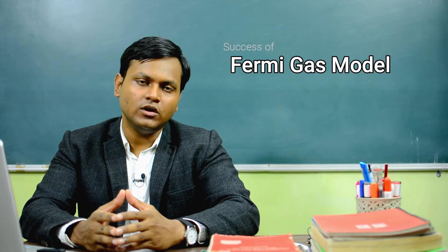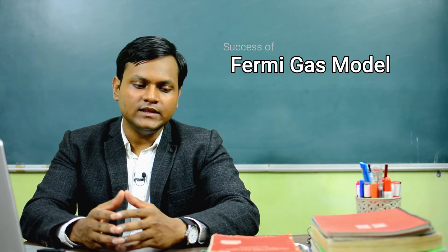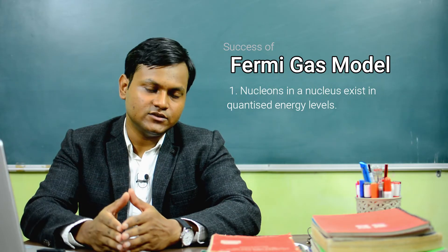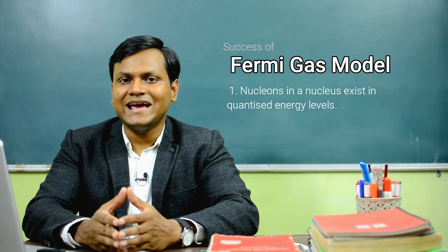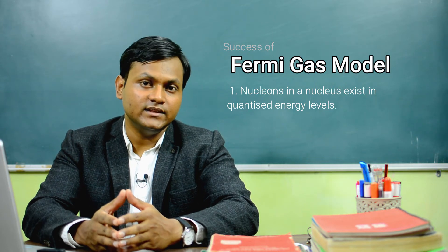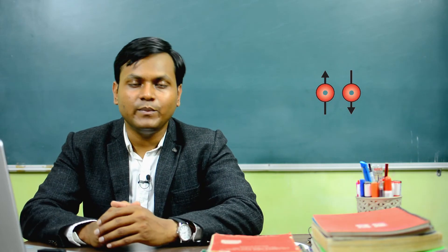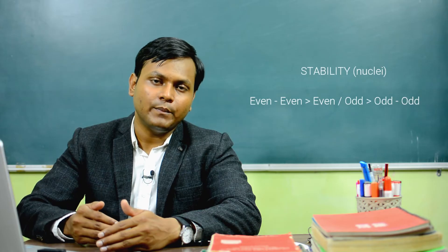What are some successes of the Fermi gas model? First, since particles are bound in a potential well they can only exist in discrete, quantized energy levels, giving both neutrons and protons their own distinct energy level diagram inside the nucleus. Second, it explains the pairing of neutrons and protons: since they are fermions occupying quantized levels, no more than two particles of opposite spin can fill one energy level, explaining why even-even nuclei are much more stable than even-odd, which are in turn more stable than odd-odd nuclei.